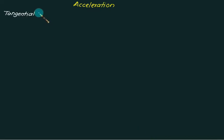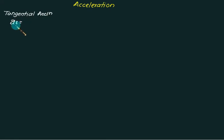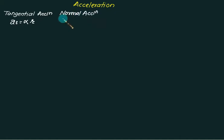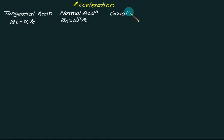In this video we will discuss acceleration. The first type is tangential acceleration, represented by At, given by alpha times radius. Then we have normal acceleration or centripetal acceleration, represented by An, given by omega squared times r, or sometimes v squared by r.